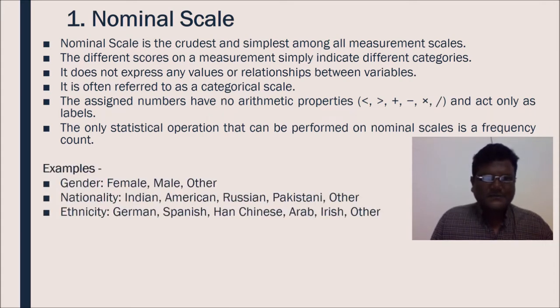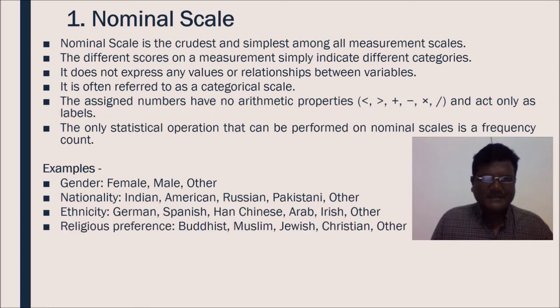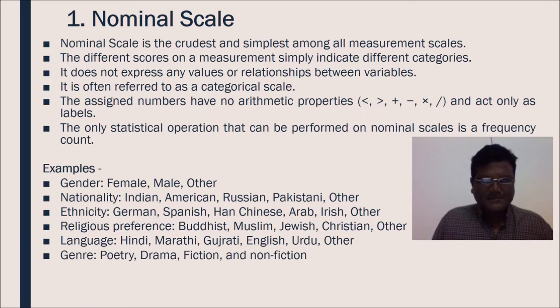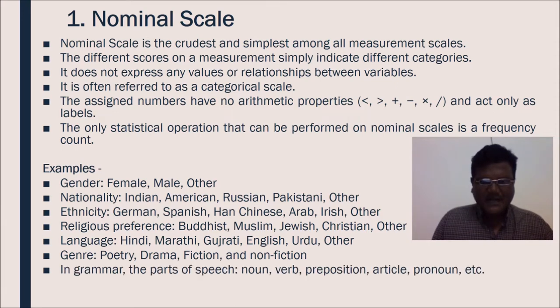Only statistical operation that can be performed on nominal scales is a frequency count. Few examples: Gender - female, male, other. Nationality - Indian, American, Russian, Pakistani. Ethnicity - German, Spanish, Chinese, Arab, Irish. Religious preferences - Buddhist, Muslim, Jewish, Christian, other. Language - Hindi, Marathi, Gujarati, English, Urdu, other. Genre - poetry, drama, fiction and non-fiction.